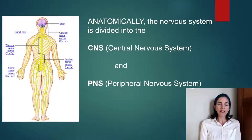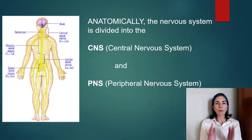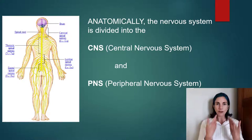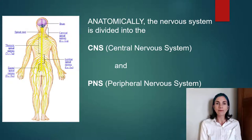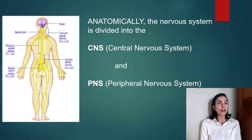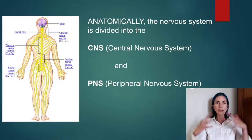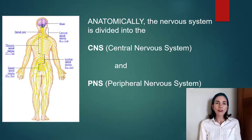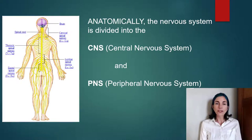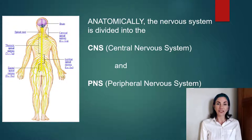Anatomically, the nervous system can be broken down into two parts. The central part runs along the center of your body and comprises the brain and spinal cord — this is known as the central nervous system. Everything else is mostly branching off the spinal cord and brain. Those are your nerves. If they branch off your brain, they are called cranial nerves; if they branch off your spinal cord, they are called spinal nerves. Together these comprise the peripheral nervous system.